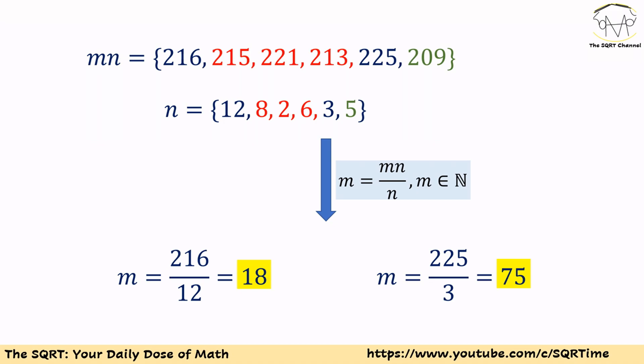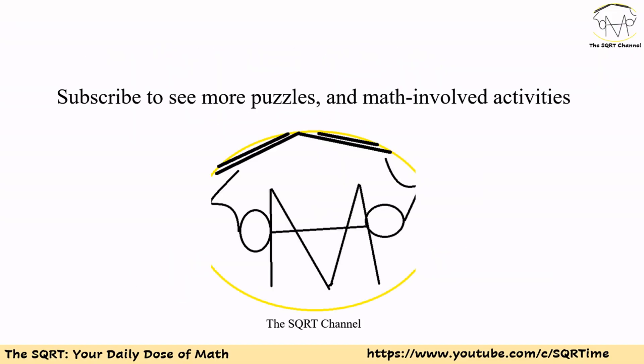From the rest we have 216/12 = 18 for m, and 225/3 = 75 for m, and these two are all answers. Thanks for watching the video. If you would like to see more puzzles and math-involved activities, please subscribe to the channel. This is the sqrt channel.